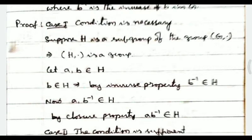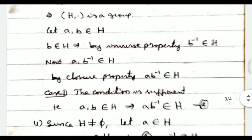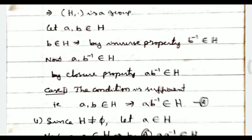Proof. Suppose H is a subgroup of G. Then H with dot is a group. Let a, b belong to H. Since b belongs to H, by inverse property, b inverse belongs to H. By closure property, ab inverse belongs to H. This proves the condition is necessary.